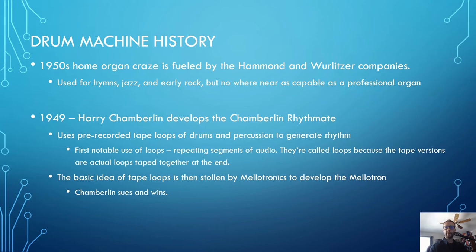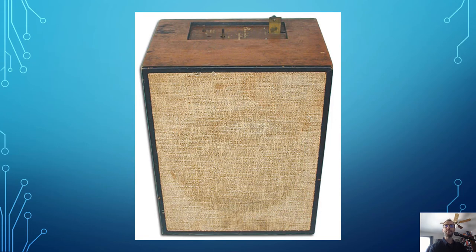The basic idea of tape loops is very interesting because at this point it actually gets stolen by Mellotronics to develop the Mellotron instrument, an early sampler device. In fact, Chamberlain sued over this and won. Here is a look at the Chamberlain Rhythmate — you would just select which rhythm was being used, and there was a very rudimentary power switch and volume control, and that was about it.